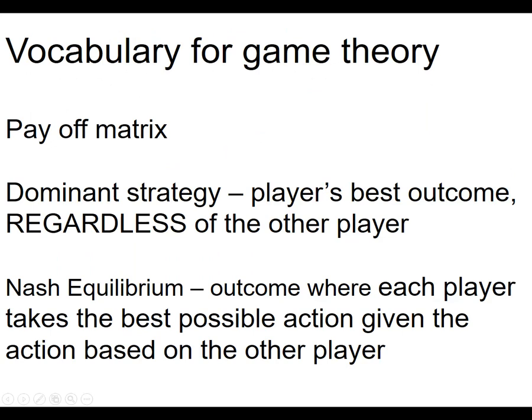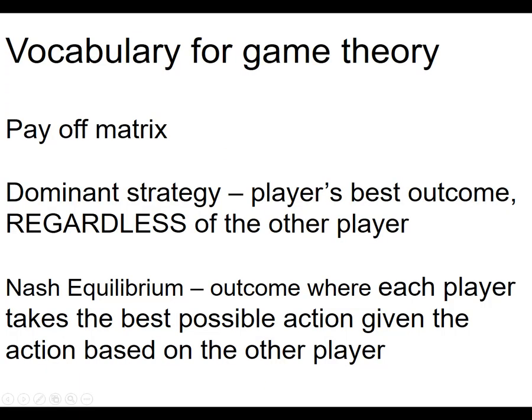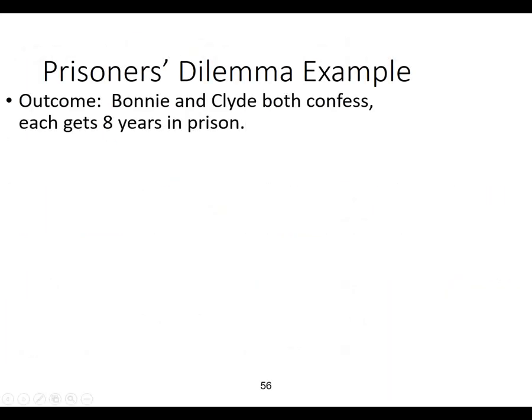This is what's called a prisoner's dilemma because the two prisoners have a dominant strategy that takes them away from what's mutually beneficial into a worse situation. The payoff matrix is the little box we drew. Dominant strategy means a player's best outcome regardless of what the other player does. And the Nash equilibrium is the outcome that's going to happen, where each player takes their best outcome.